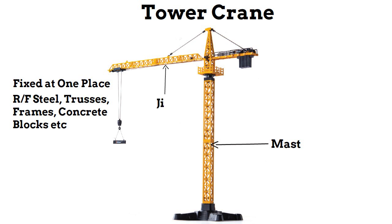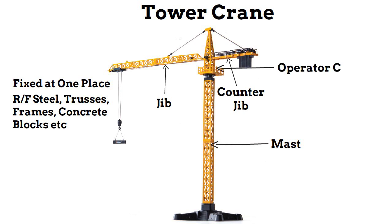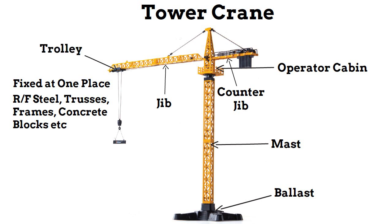The jib is the operating arm of the crane. The counter jib, which is the other arm, carries counterweight on the rear side of the crane. The operator cabin is from which the crane can be operated. Crane ballast stabilizes the crane against its own weight. The trolley is a car which moves along the jib.